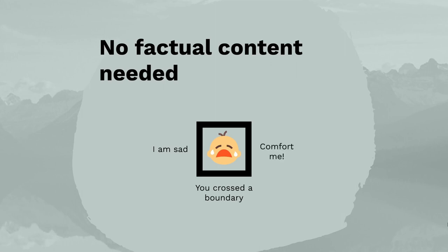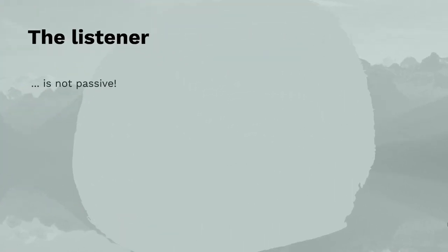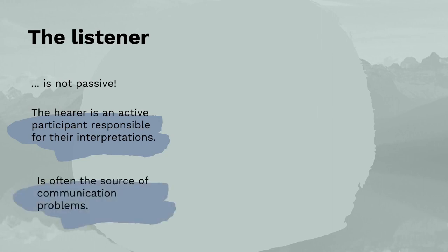For Schultz von Thun, communication does not necessarily have to contain factual information such as words. A crying infant might not speak, but still reveals that he is sad, that some boundaries were crossed, and that he needs to be comforted. Contrary to many other models, Schultz von Thun does not see the listener in a passive role — the hearer is an active participant responsible for their interpretations. When communication problems arise, they are only rarely related to factual content and mostly stem from the other three aspects, and are often caused not by the speaker alone but by the hearer's subjective interpretation.